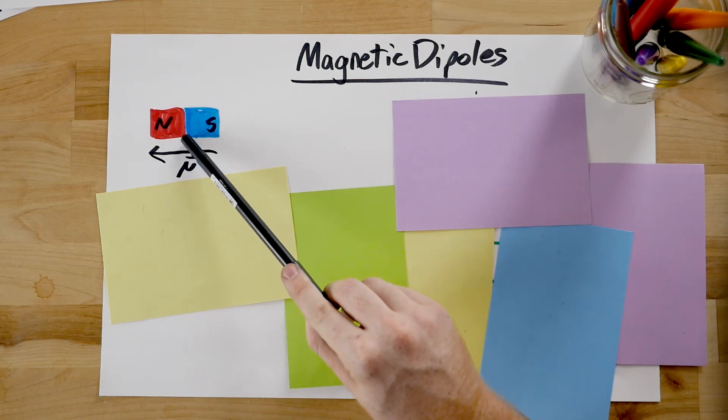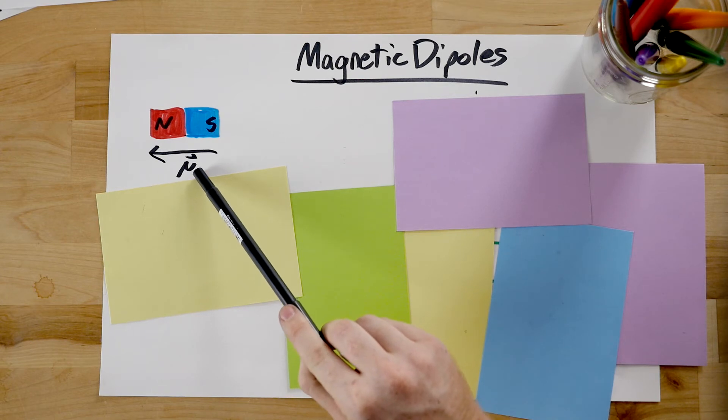This is in fact the direction of the magnetic dipole vector, mu, from south to north.